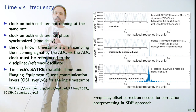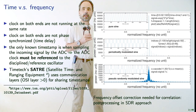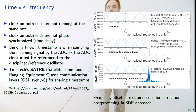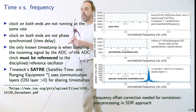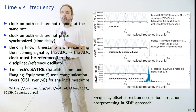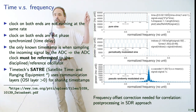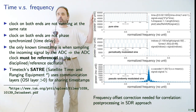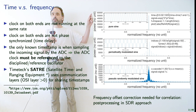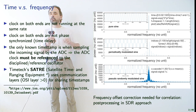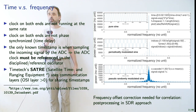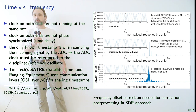Before getting into the details of time and frequency transfer, let's quickly define what frequency and time are. Frequency is a signal where all periods look similar to each other — a sine wave with a repetitive pattern. Looking at the spectrum, it has a unique Dirac function because each period is similar to its neighbor. If we want to introduce time information, we need something more.